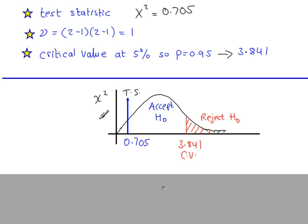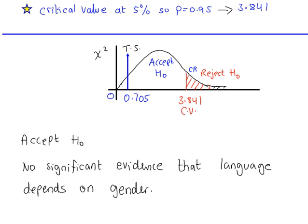Mark everything on your sketch. Here's the critical value. Here is our test statistic. And this is just a number line starting from 0 here. Clearly, we're going to accept H0, because the TS value did not fall in the critical region. This is the critical region at this end. So we say there is no significant evidence that language depends on gender.